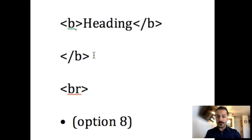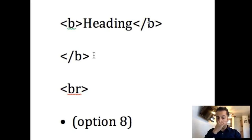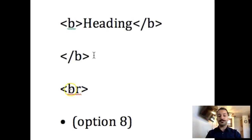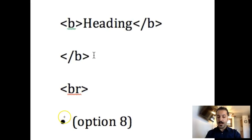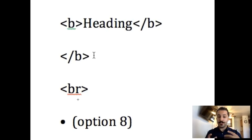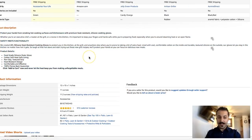Four different symbols you need to know to create a beautiful description: First, shift comma, B, shift period — opening the heading or title in bold. At the end of it, shift comma, forward slash, B, shift period — closing it, telling the system this is what you want in bold. Second, shift comma, B, R, shift period — giving you line breaks or dropping your wording down. And option eight gives you those bullet points. That's pretty much it when it comes to using HTML codes to make your description beautiful and stand out.